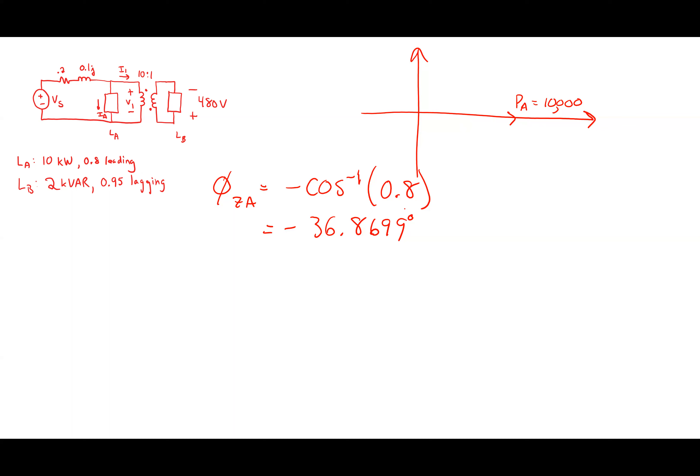That's a pretty low power factor — 0.8 is considered quite low. In practice, we'd want it much closer to 1. So let me figure out the rest of the triangle.